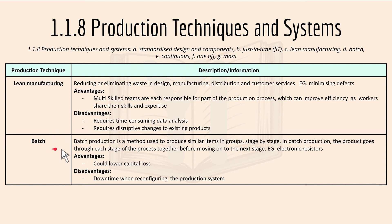For batch production: this is a method used to produce similar items in groups, stage by stage. The product goes through each stage of the process together before moving on to the next stage — for example, electronic resistors. An advantage is a lower capital loss, and a disadvantage is downtime when reconfiguring the production system.